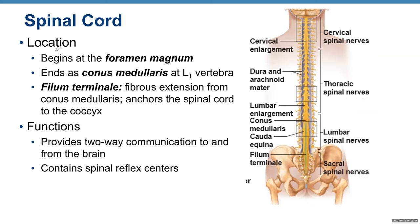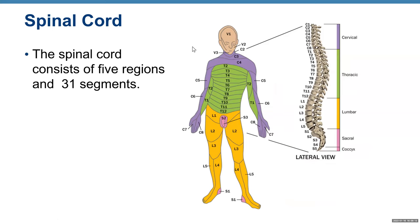Spinal nerves are part of the peripheral nervous system, so I'll cover them in another video on spinal and cranial nerves. At the end of the spinal cord, after the conus medullaris, you have a bunch of spinal nerves that form a structure called the cauda equina. The spinal cord consists of five regions and 31 segments — cervical, thoracic, lumbar, sacral, and coccygeal — and 31 segments correspond with 31 spinal nerves, with a right and left nerve emerging from each segment.